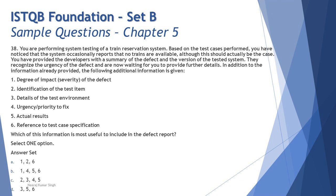Item two — identification of the test item, such as a test case ID — will not really help the developer fix the issue at this point, since they already understand what feature was tested and what the summary of the issue is. Item three — details of the test environment — is crucial. The defect might appear in your QA environment but not in the development environment. Since development and QA environments can differ, the test environment details are a very important attribute to share.